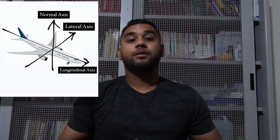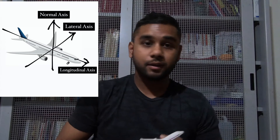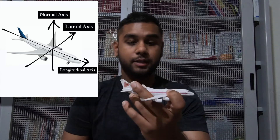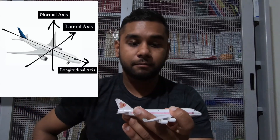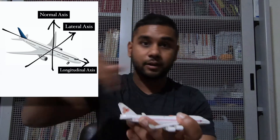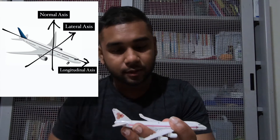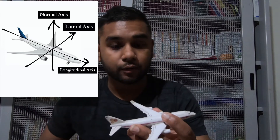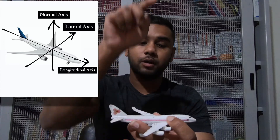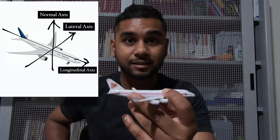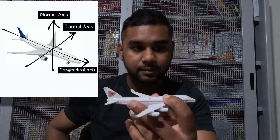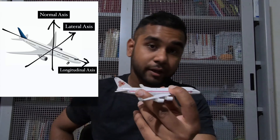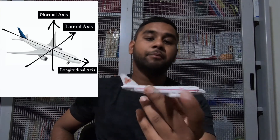As you can see on the screen, there are three types of axes of an aircraft — one which goes vertically, one which goes horizontally, and one which goes perpendicular to the horizontal axis, so you can say X, Y and Z. The one which goes vertically from top to bottom we call the normal axis, the one which goes from one wingtip to the other we call the lateral axis, and from nose to the tail we call it the longitudinal axis.